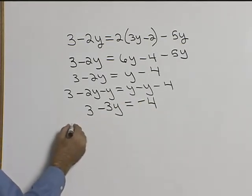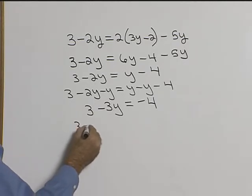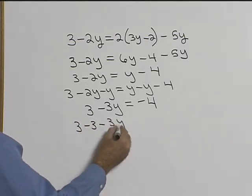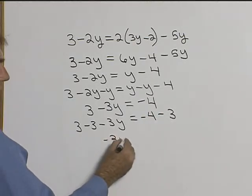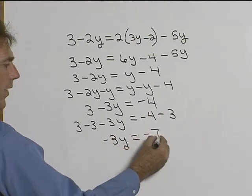Now how do we get rid of this 3? Well it's a positive 3 so we're going to have to subtract 3 from both sides. Our 3's drop out and we have negative 3y equals negative 7.